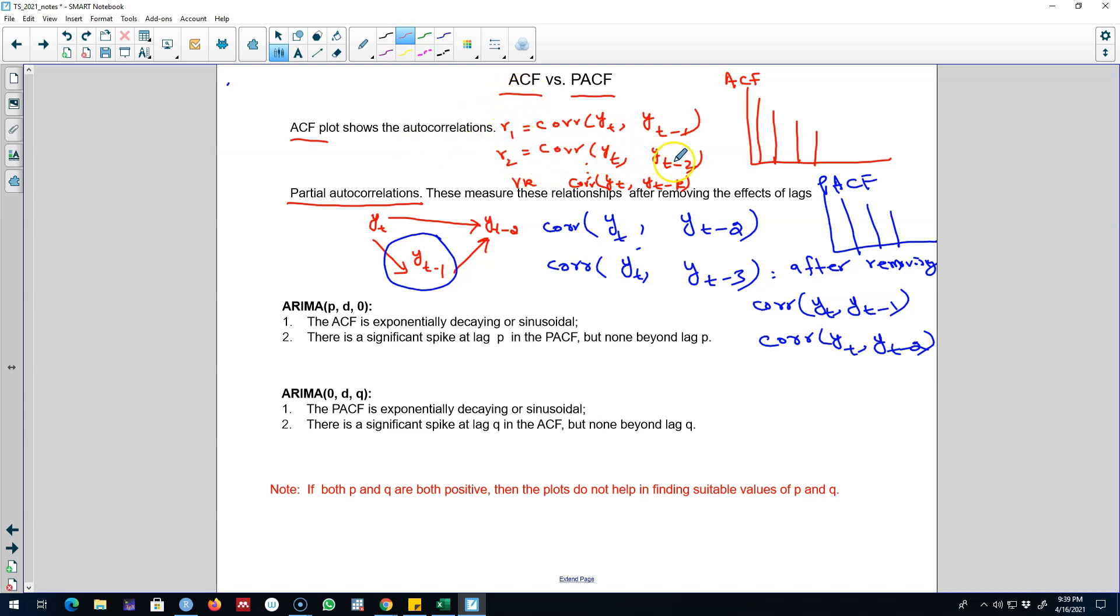y_t and its kth lag. In the case of partial autocorrelation, we remove in-between lag's correlation. Now we can use these two concepts to choose the value of p and q in our ARIMA models. We will use